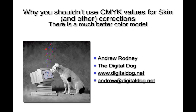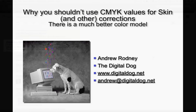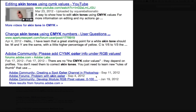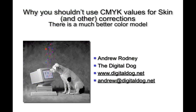A week doesn't go by that I don't see someone on the internet asking how they should go about color correcting images. They usually ask about skin tone and then someone will post a tutorial talking about the use of CMYK. In this tutorial I want to show you why I think CMYK is probably the least appropriate color space to be using for this kind of work. There are other color spaces that are much easier to understand and work with and don't present the problems that we see in CMYK.